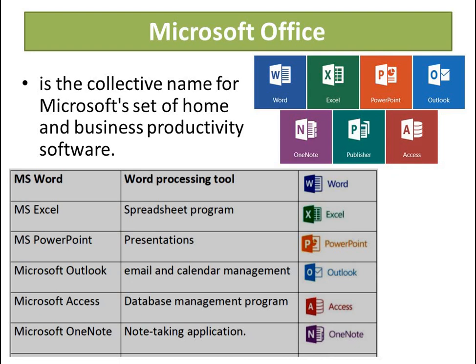Microsoft has given a pack that has different options: MS Word, Excel, PowerPoint, Outlook, Access, and OneNote. Word is a word processing tool — you can type letters or even question papers using MS Word. Excel is a spreadsheet program — you can see its green color icon on screen. PowerPoint is for presentations. Outlook is for email and calendar management — you can schedule and check your mail.